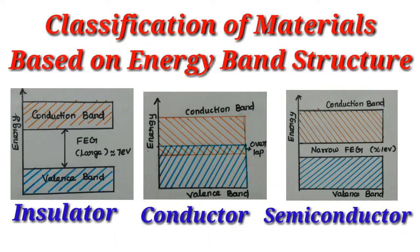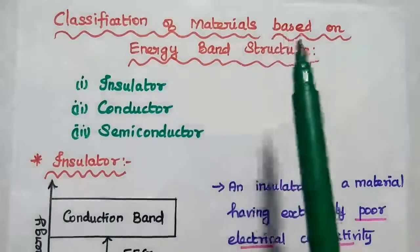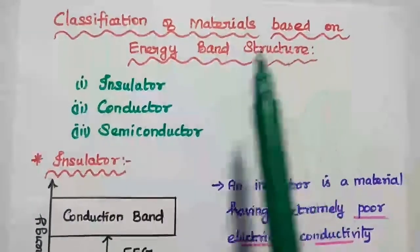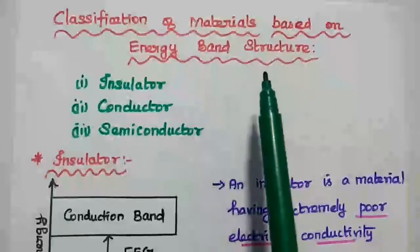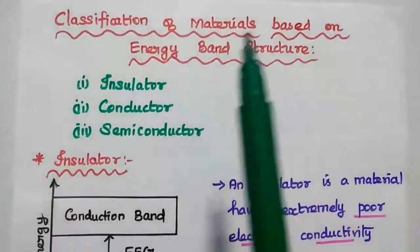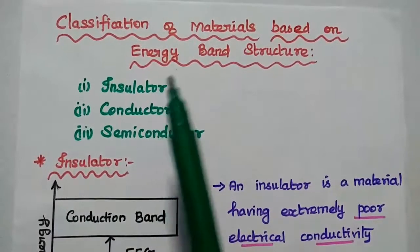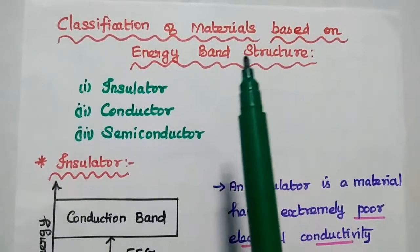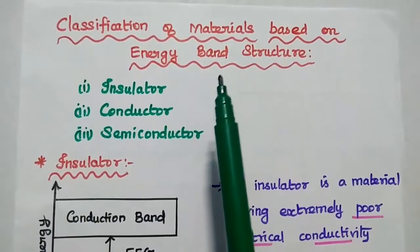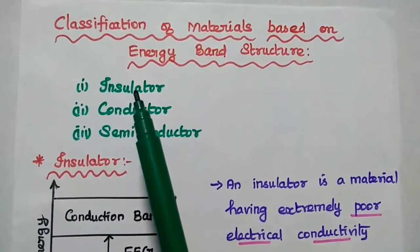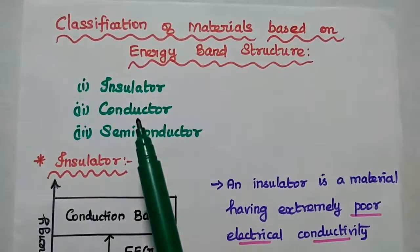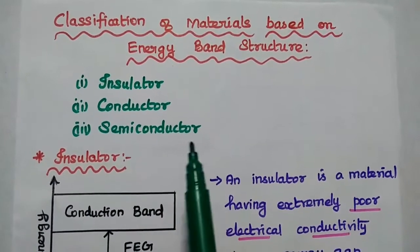Dear students, now we are going to discuss classification of materials based on energy band structure. Based on the energy band structure, we can classify the materials into three types: insulator, conductor, and semiconductor.